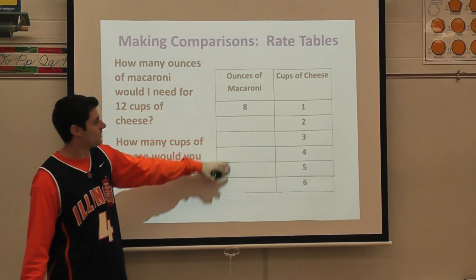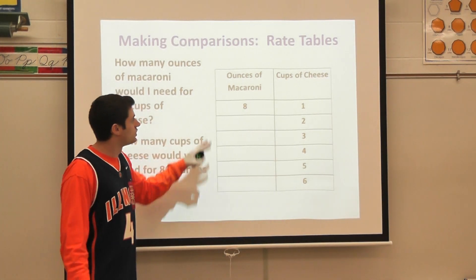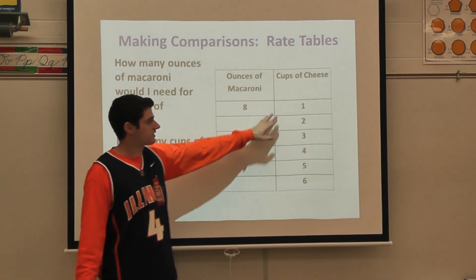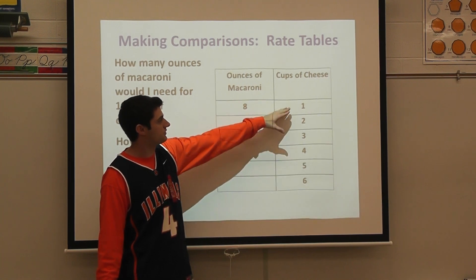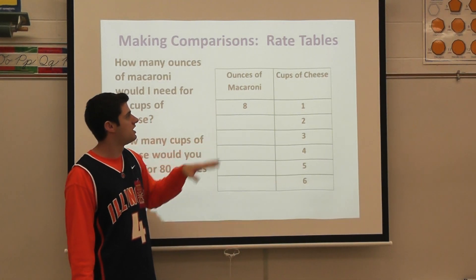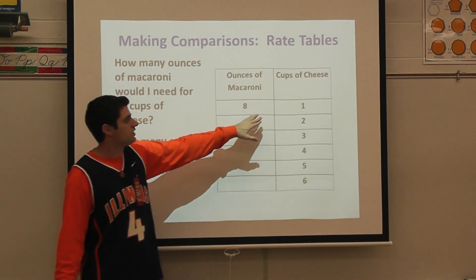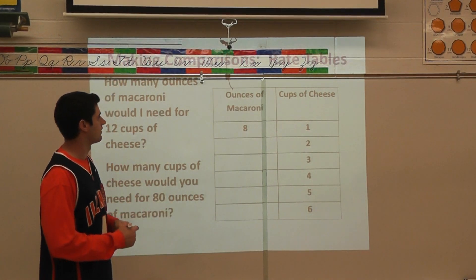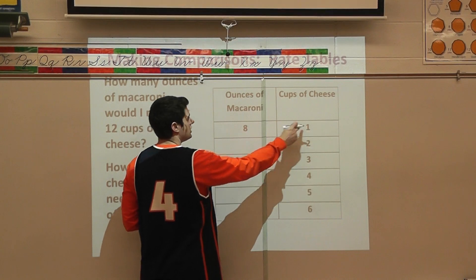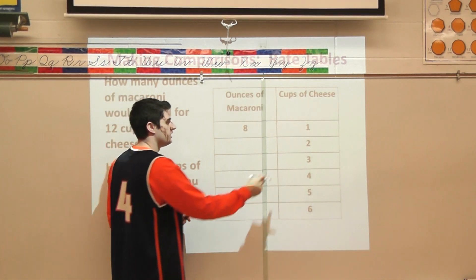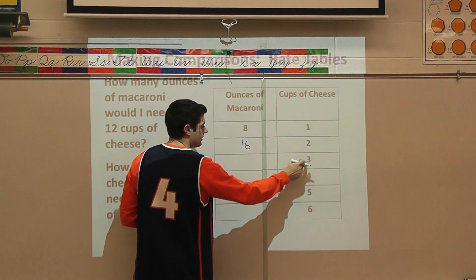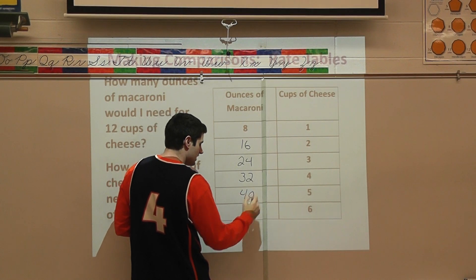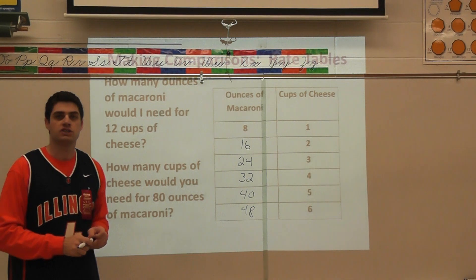Looking at my rate table on the left-hand side, I want to analyze my information. I have ounces of macaroni and cups of cheese. The table has already given me the cups of cheese and the ounces of macaroni for each one of the cups. I notice I'm going from one to eight, so I can make a conjecture that I'm multiplying by eight. To go from cups of cheese to ounces of macaroni, I multiply by eight: two times eight is 16, three times eight is 24, four times eight is 32, five times eight is 40, and six times eight is 48. Chart completed.